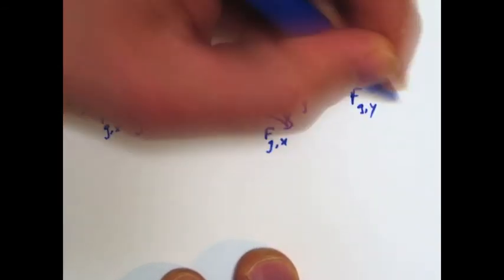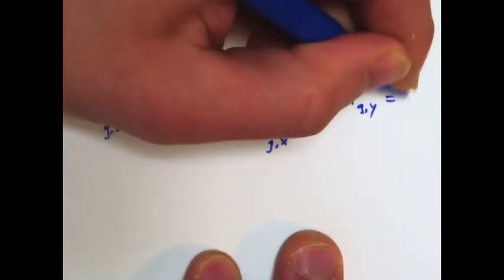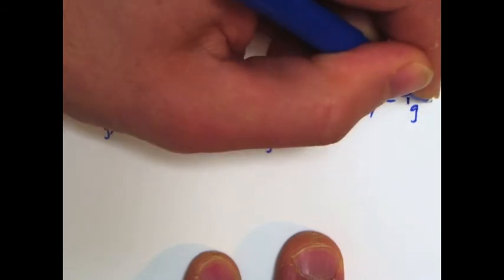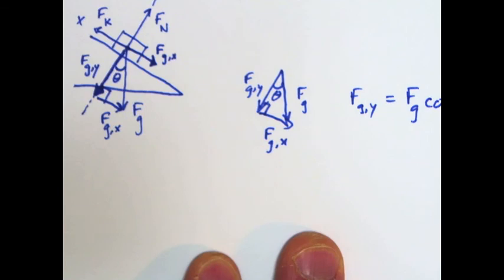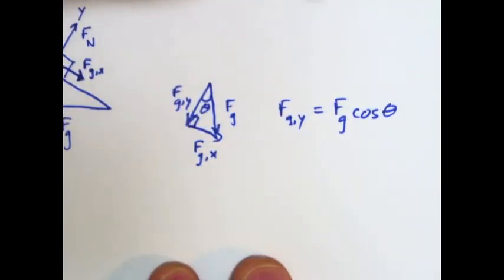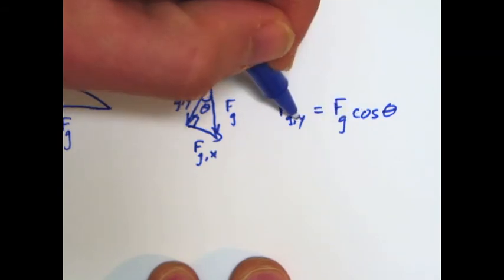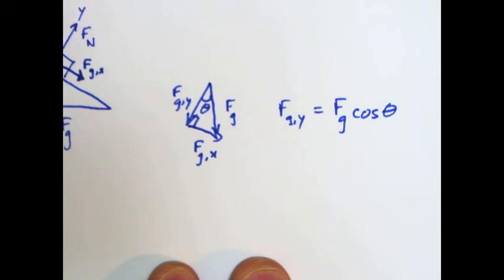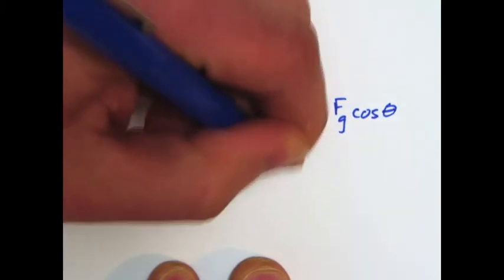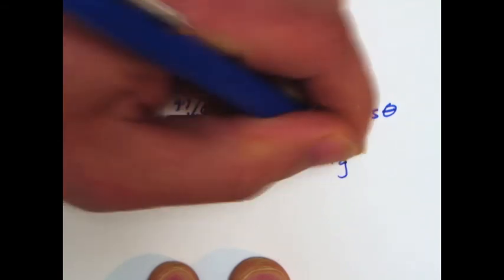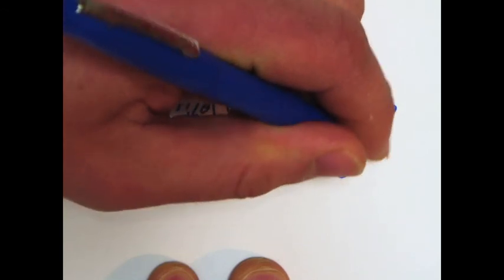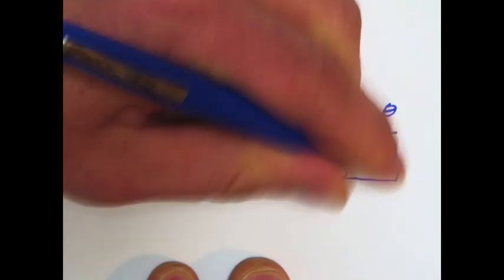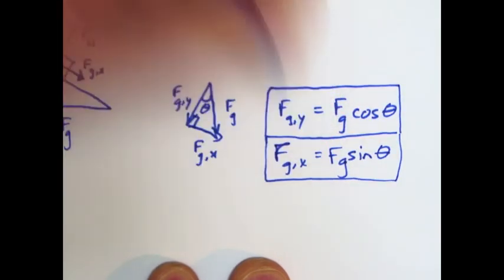Okay. So FGY is going to be equal to my hypotenuse, FG, times the cosine of theta. And you might be saying, wait a minute, cosine doesn't go with Y. But now it does because we shifted our axis and the angle moved to a different place. And so notice that FGY is the adjacent vector to that angle. And cosine is the trig function that goes with the adjacent side. And likewise, FGX is going to be FG sine theta. So these are my two equations for the components of the weight.